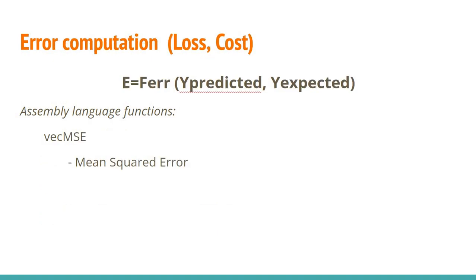Now, after computing the forward path and obtaining an output, we need to see what error we have compared to an expected output. So this is known as error computation and in some cases it is known as loss or cost function. So basically we have an error function which takes as parameters the predicted output and the expected output and will return a value.